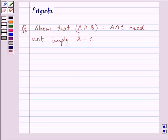Hi and welcome to the session. Let us discuss the question which is given to us. It says, show that A intersection B equals A intersection C need not imply set B equals set C.